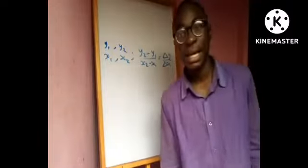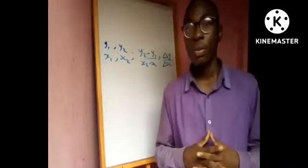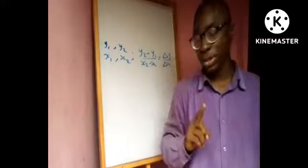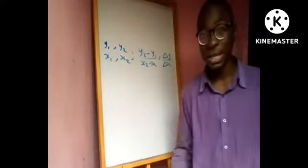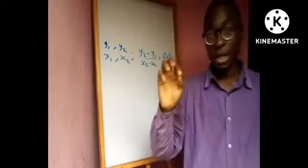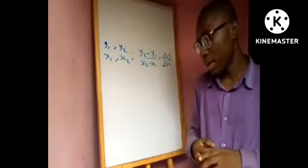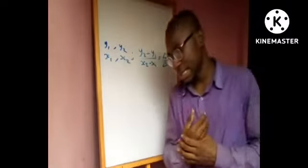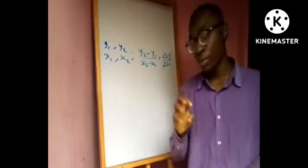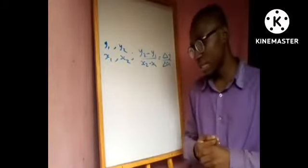A tangent is a straight line that touches a circle at only one given point, and the tangent represents the gradient of that line at that point. The tangent to a curve at a particular point represents the gradient of that curve at that point — it's like an instantaneous value. The gradient of a curve at a point is given by the gradient of the tangent at that point.